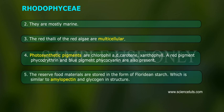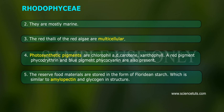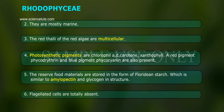The reserve food materials are stored in the form of floridian starch, which is similar to amylopectin and glycogen in structure. Flagellated cells are totally absent.